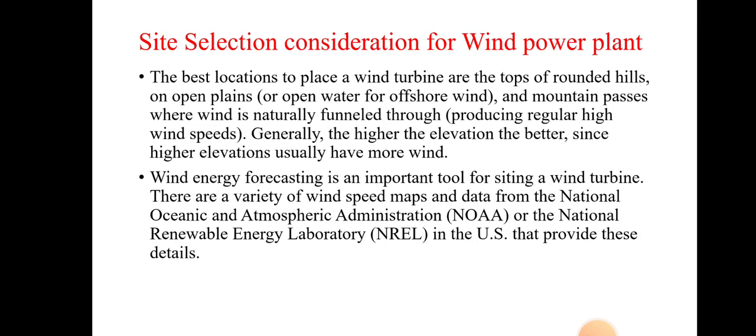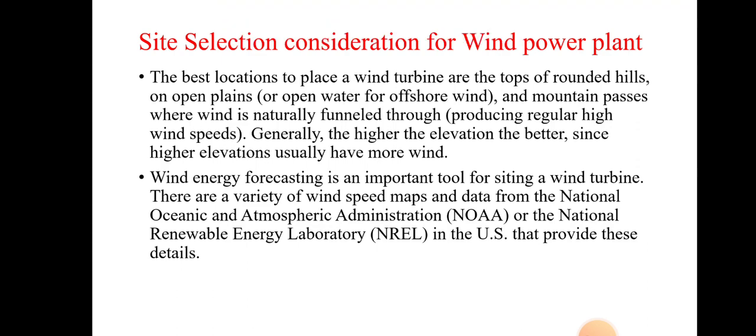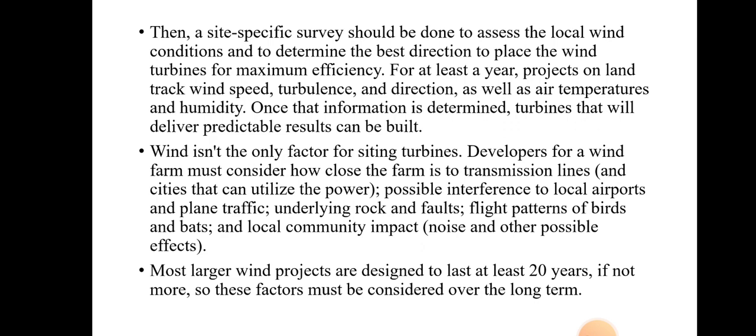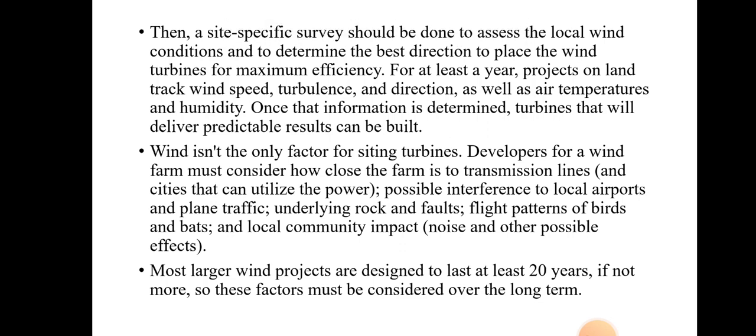In summary, the factors to consider while selecting the site for wind power plants are: first, availability of airflow; second, the turbine should be at a higher level, not at the bottom; third, you should be able to receive wind forecasting data easily; fourth, check whether the conditions of the area are changing; fifth, the developer must ensure that transmission of generated electricity does not require excessively long lines; and finally, the plant should be designed to run for at least 20 years or more.